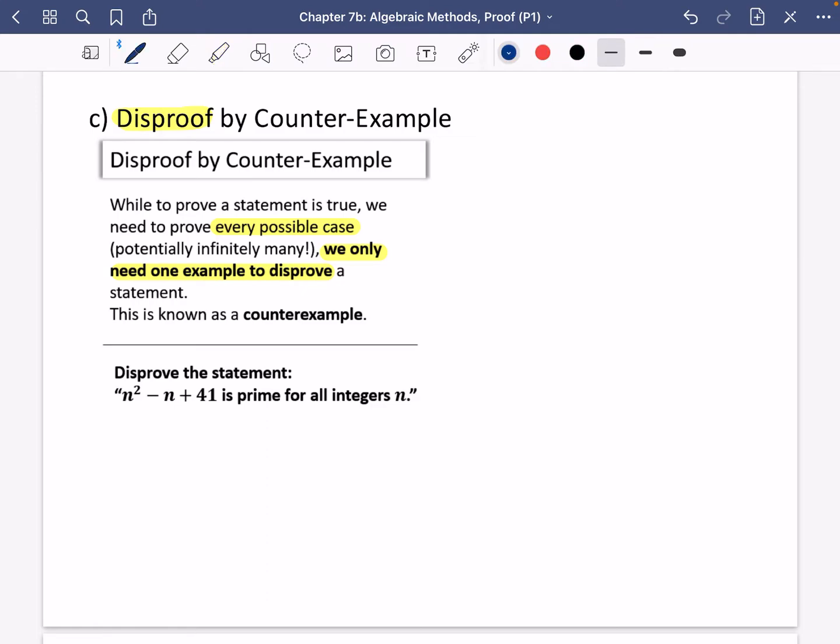For this one we've got here, it wants us to disprove the statement that n² - n + 41 is prime for all integers. And this one is a really sneaky kind of question, because when you try different values for n, for example, if you try that n is equal to 1, you would get 1² - 1 + 41, which is 41, and it's prime.